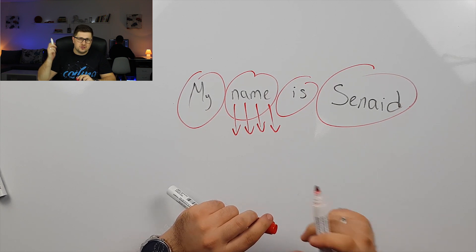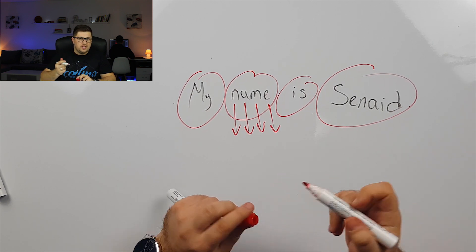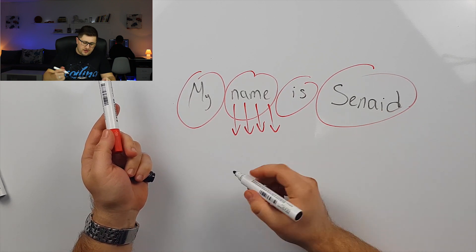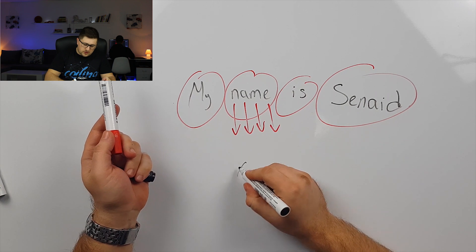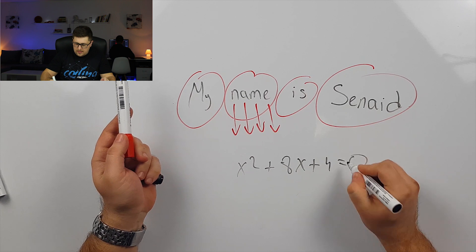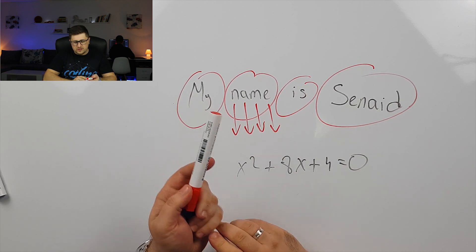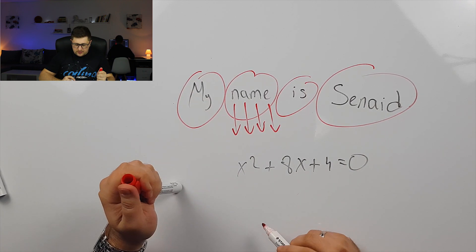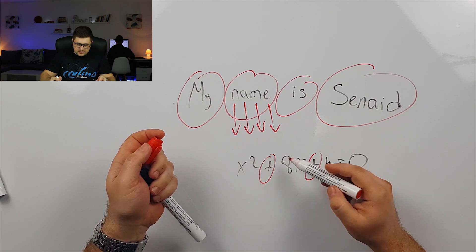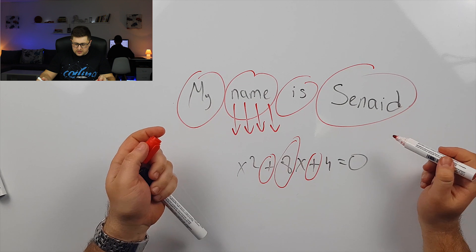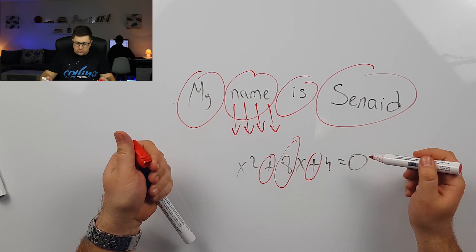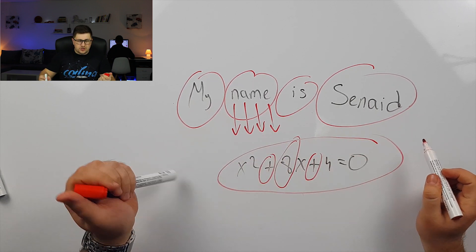For example, if we think about math and we have a simple equation that we need to solve, we can see that we have different operators and we have numbers. So in order to be able to solve this entire equation,